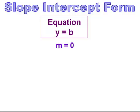When you're given an equation that is just y equals some number, the slope is going to be zero. And when the slope is zero, it has a horizontal line.